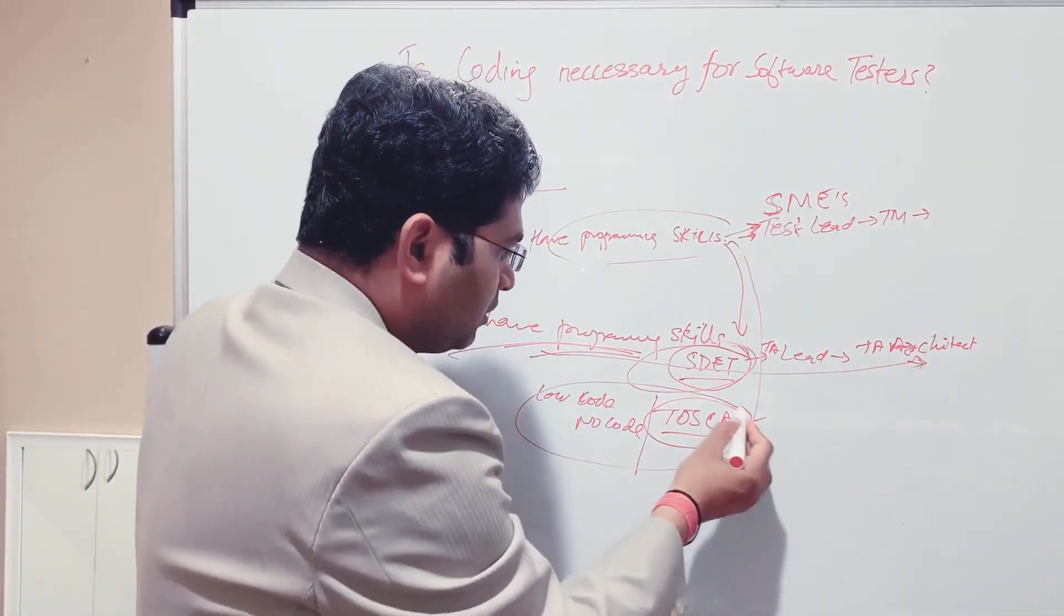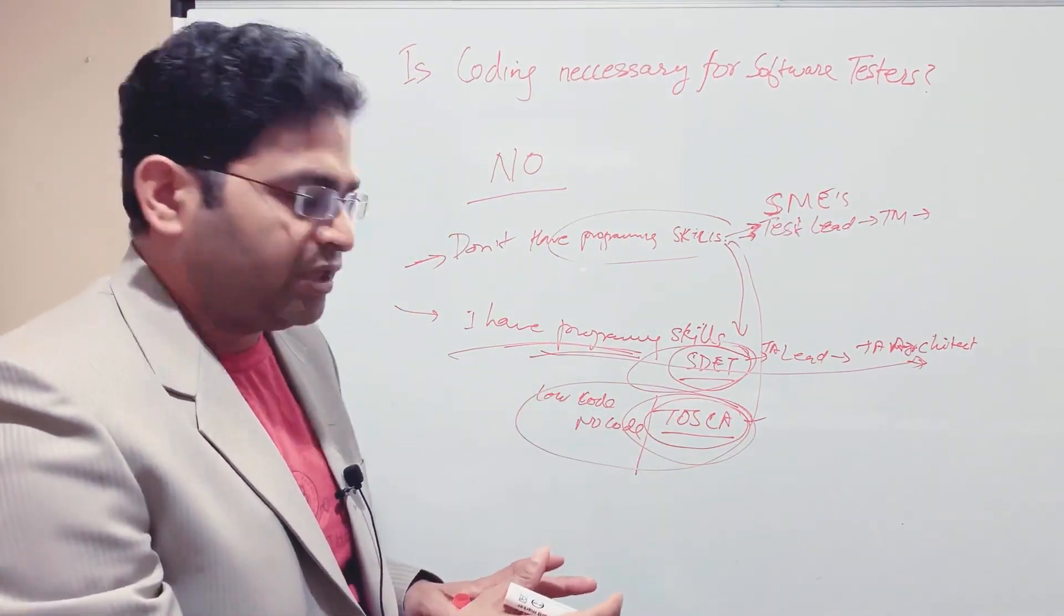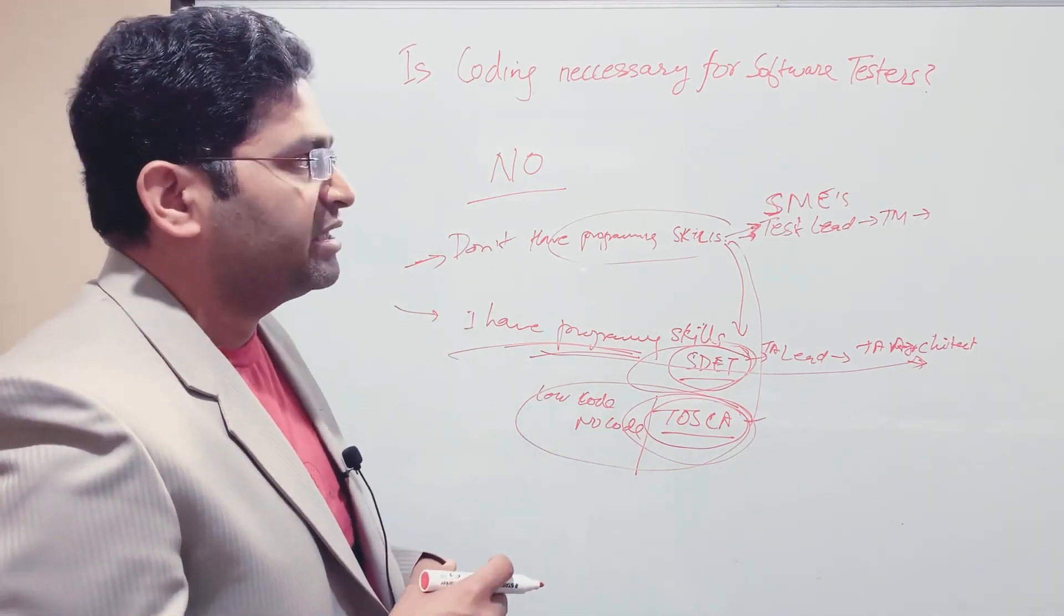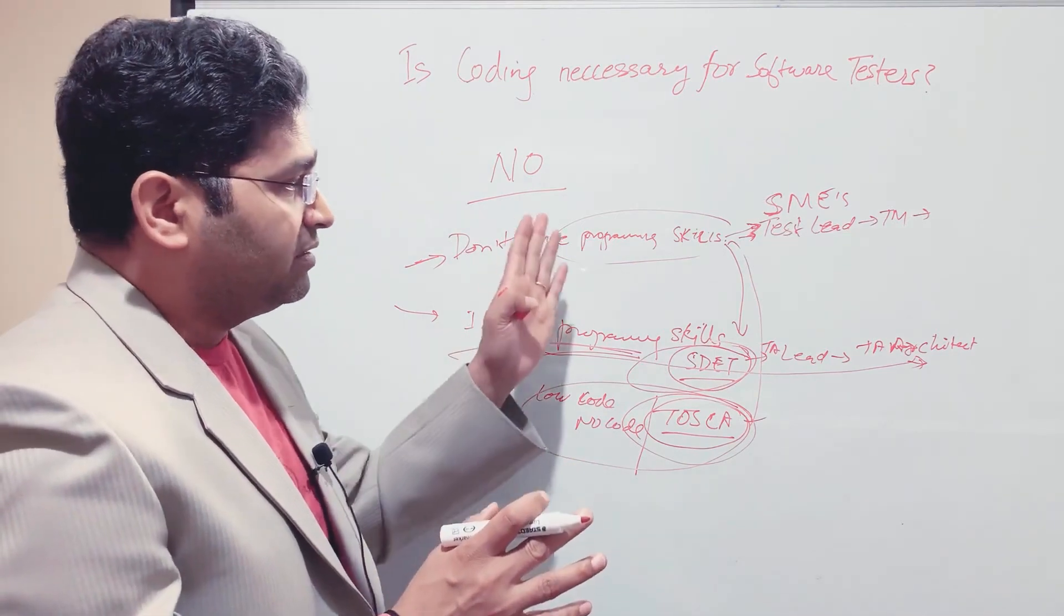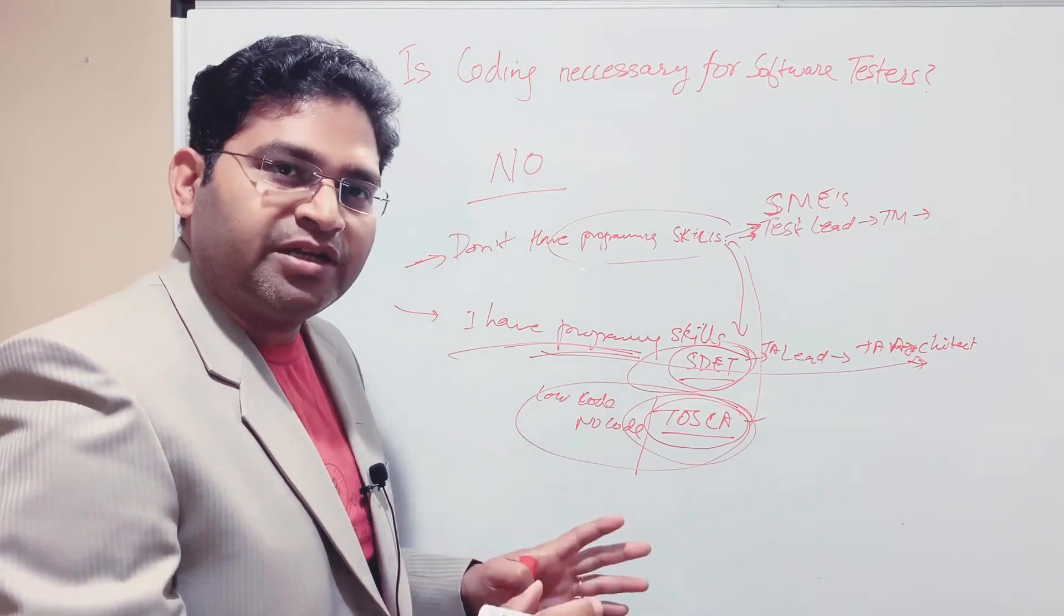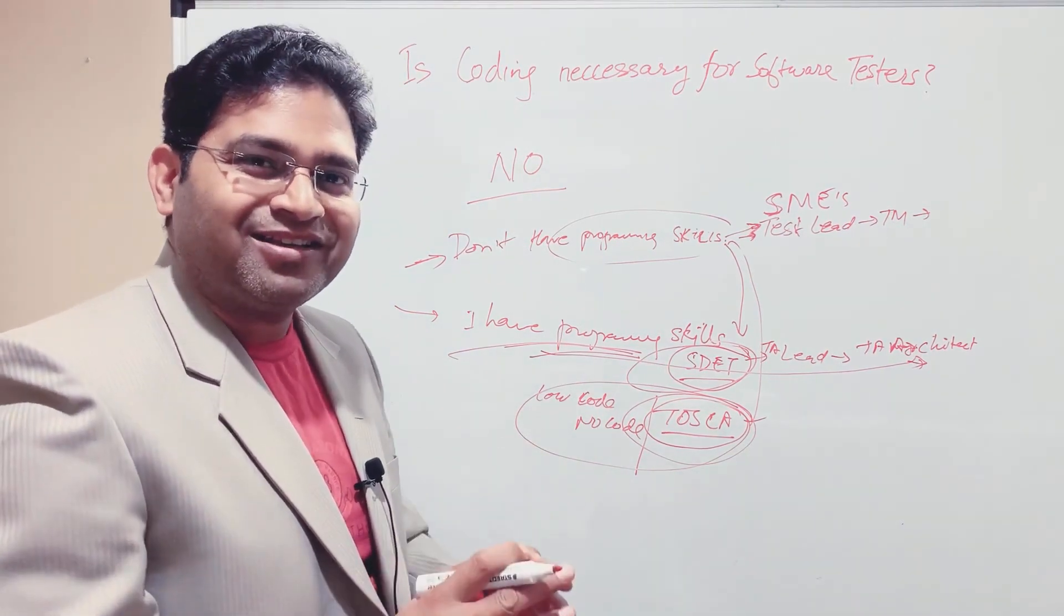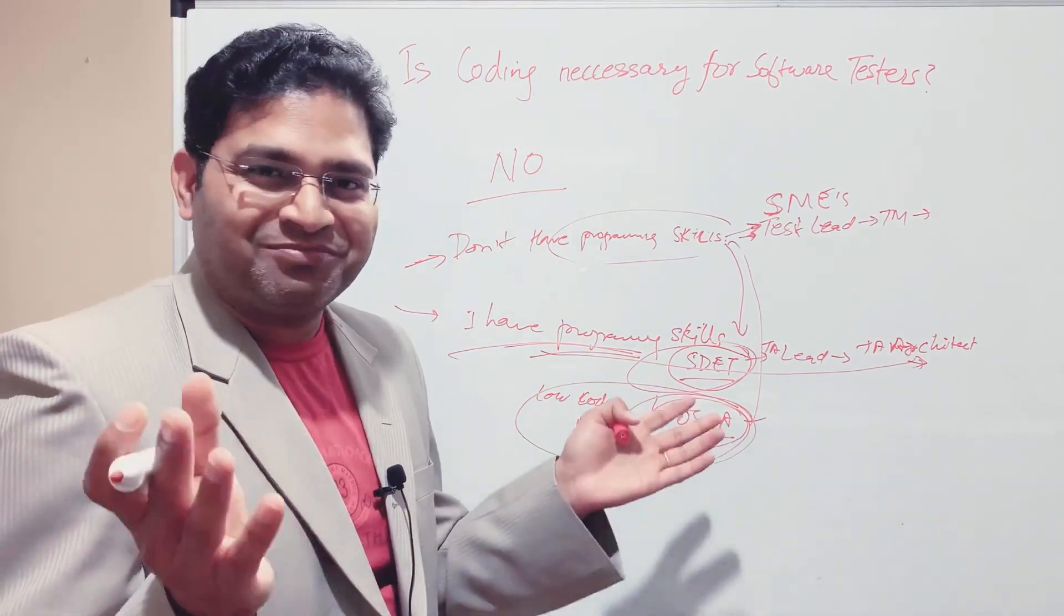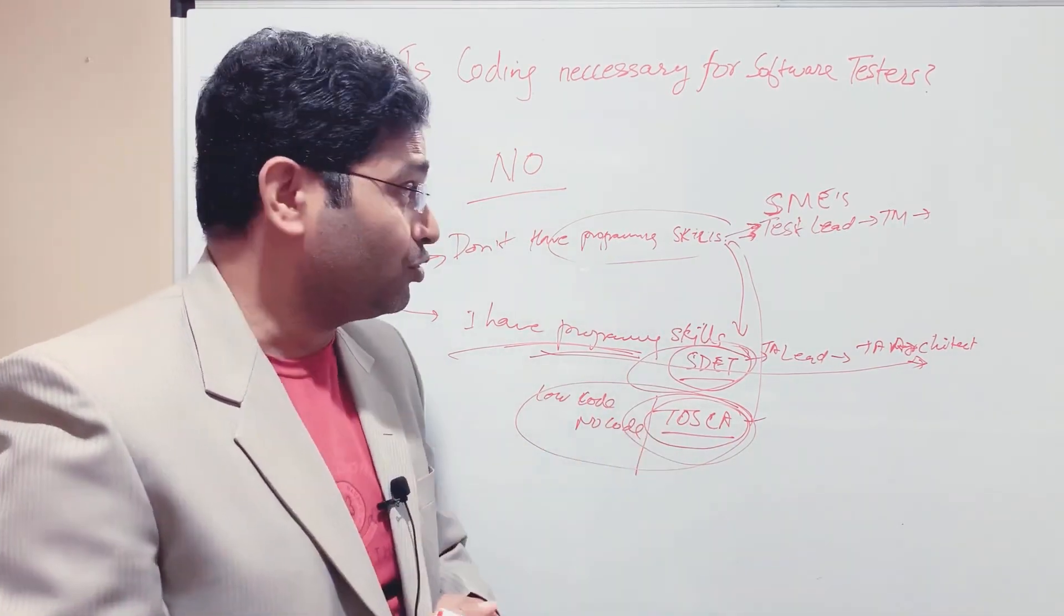That's basically a brief about is coding necessary for software testers. So absolutely no. And this is the brief roadmap or path that you can take. Do not worry, software testing is not going anywhere. It's going to stay unless artificial intelligence becomes so intelligent that it becomes Chitti. Chitti has started taking over. If you have watched Robot movie, you would know what I'm talking about. The robot becomes so powerful with artificial intelligence that they have the intelligence of humans.